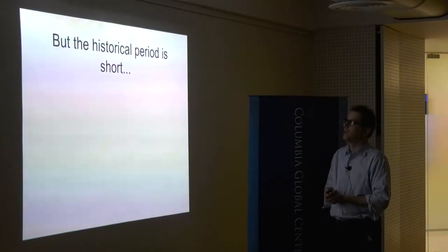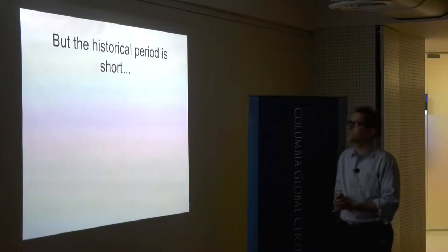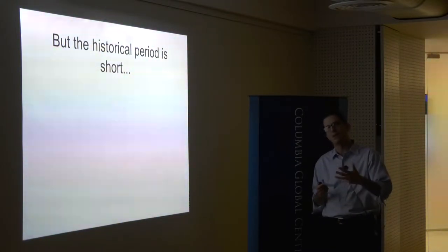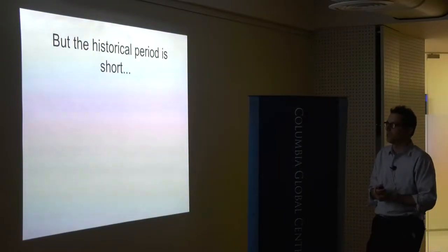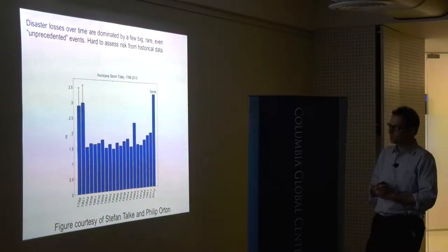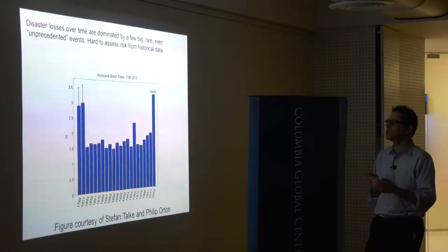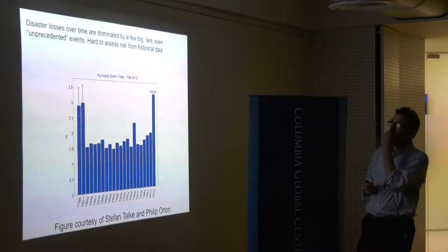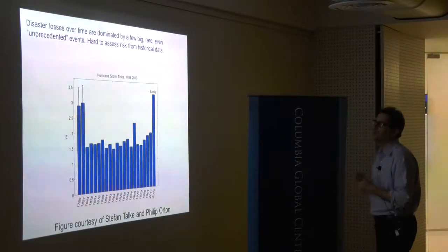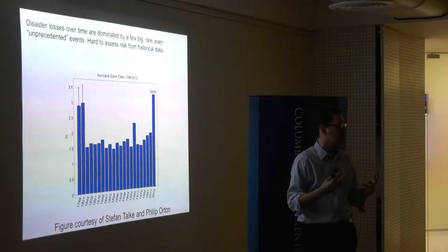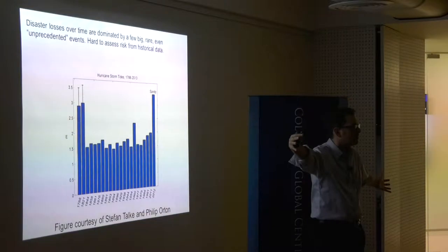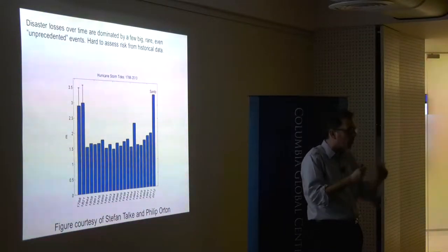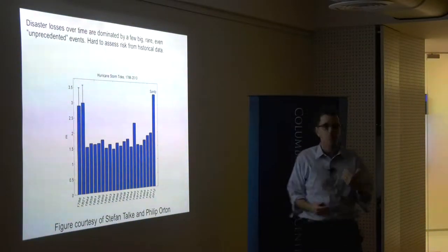It hasn't happened in modern times, but the historical record is short — really only good data going back to the late 19th century, which is not long. You can't reliably estimate probability just by counting how many times it's happened. This is typical of disaster risk assessment: looking at damage globally over time, most of the damage comes from a few very large, very rare events. Those big ones are hard to assess from historical data alone.